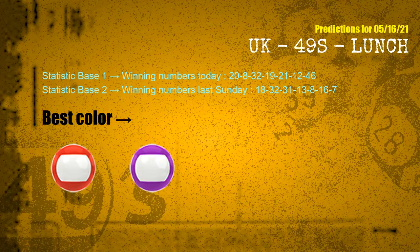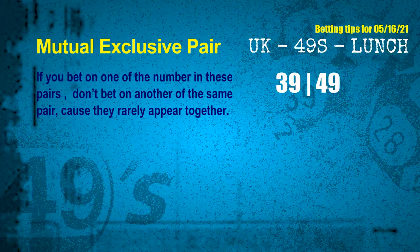According to the statistics above, with winning numbers today 20, 08, 32, 19, 21, 12, 46, and winning numbers last Sunday 18, 32, 31, 13, 08, 16, 07 — the frequent following colors are red and purple. Now we have some following ones and ball colors. Here are some tips for you to increase hit odds, such as mutual exclusive pairs. These numbers in a pair both match the following ones and colors, but according to thousands of results before, they rarely appear together — meaning if you bet on one, don't bet the other in the same pair.